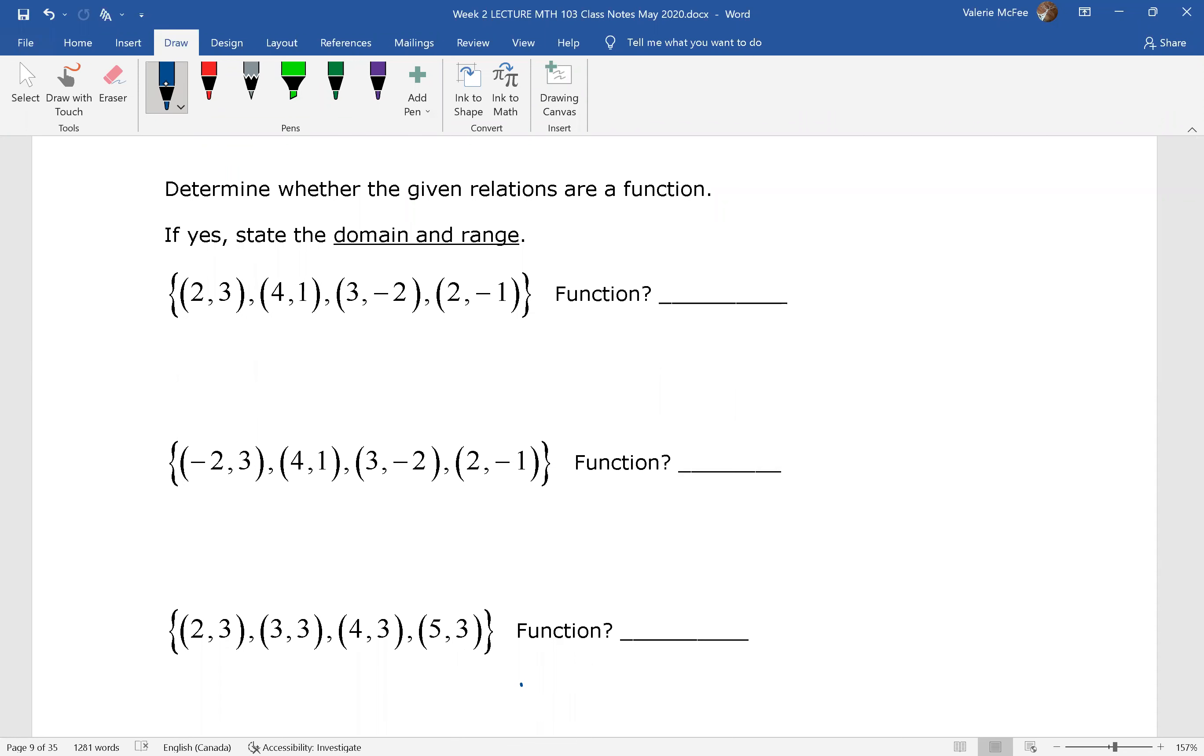So we have a set of relations listed here, and we want to determine whether each of them is a function or not. And if they are functions, we want to state the domain and range. Let's look at our first example. 2 corresponds to 3, 4 corresponds to 1, 3 corresponds to negative 2. But now I have 2 corresponding to negative 1. This value 2, my input, has two outputs. Remember that a function says that every X corresponds to exactly one Y. This X is corresponding to two different Y values. So no, this is not a function.